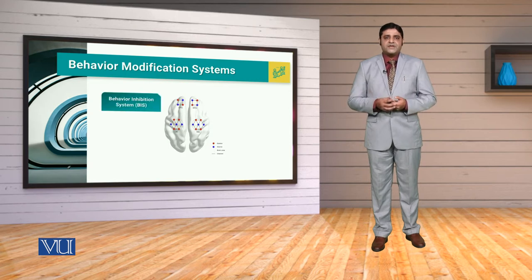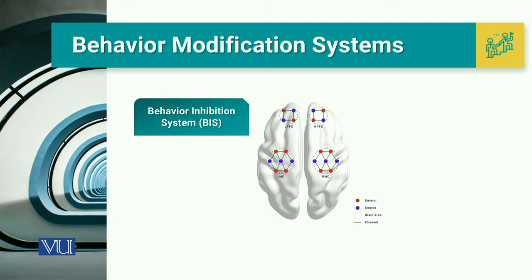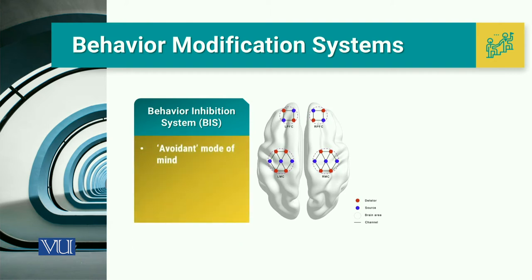The first one is the Behavior Inhibition System, and this Behavior Inhibition System is basically focusing upon the fear side — it is basically focusing upon the avoidant perspective of the human self. This avoidant perspective covers fear, disgust, anxiety, or aversion.